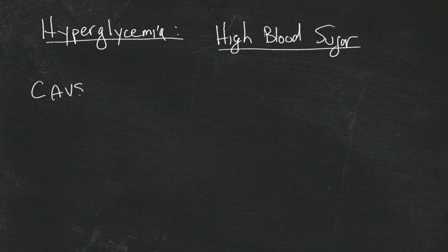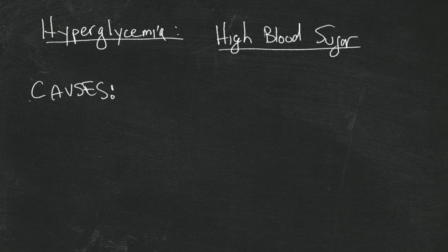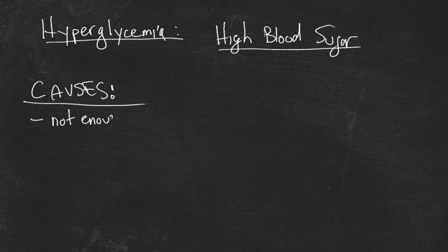The next part of the hypo-hyperglycemia is hyperglycemia, or as the name implies, high blood sugar. What are some of the causes of high blood sugar? Well yeah, it's quite the opposite of low blood - it's just the opposite of low blood sugar.